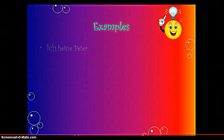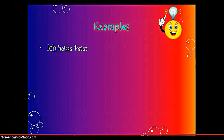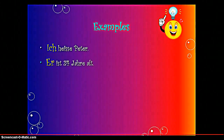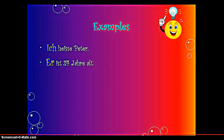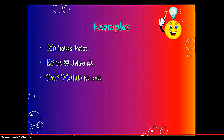Let's take a look at some examples. For example, 'ich heiße Peter' — ich is the Nominative subject. 'Er ist alt' — er is the Nominative subject, sein is the Nominative verb, and ist is the conjugation of sein with er. 'Demann ist nett.' All subjects which are used before the verb are always Nominative subjects, so we have to pay attention while observing the nouns.